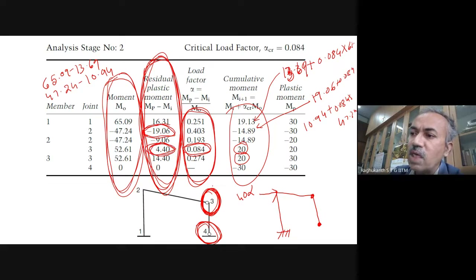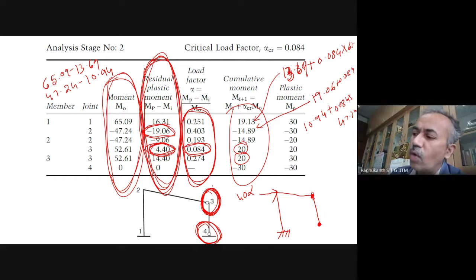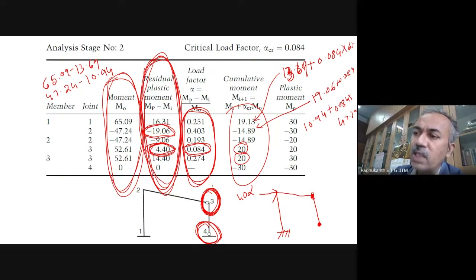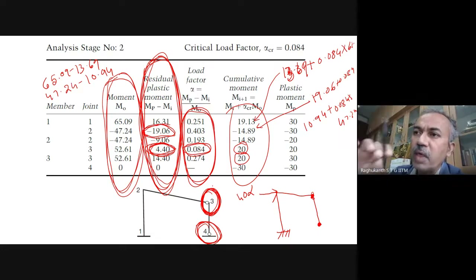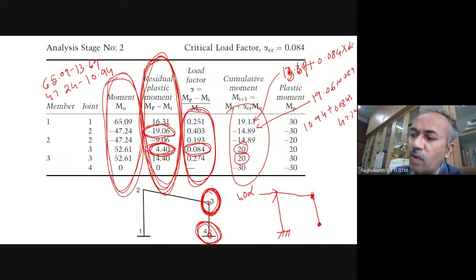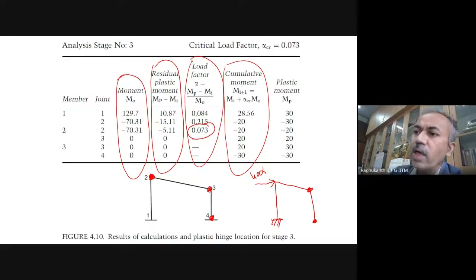Once hinge gets formed, your fixed frame — one end becomes fixed, other end becomes hinged. The next stage: calculate bending moments and residual moments. Because in the first plastic moment, we have 30 or 20 or whatever — that has to be subtracted. The residual moments, whichever is the smallest — that is the place where your hinge may next get formed.